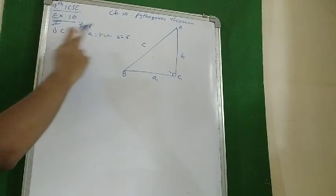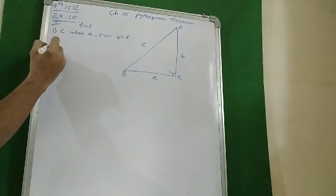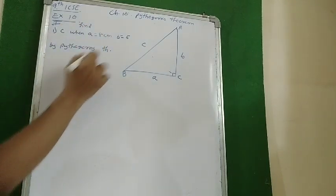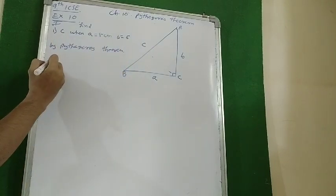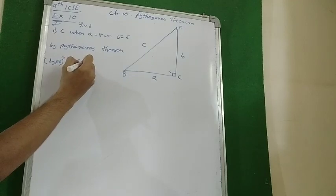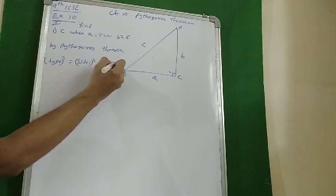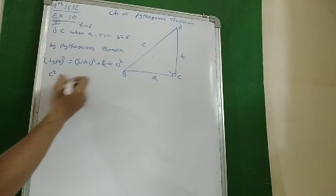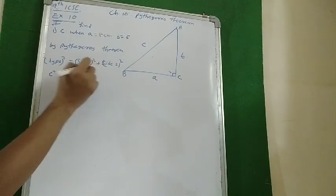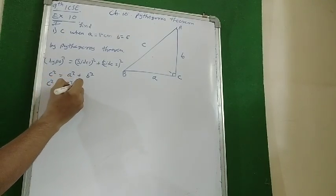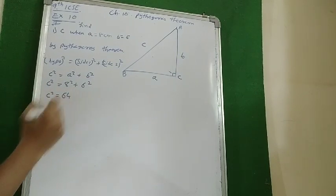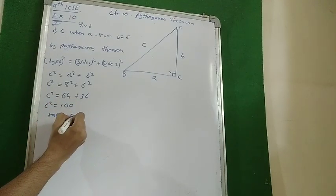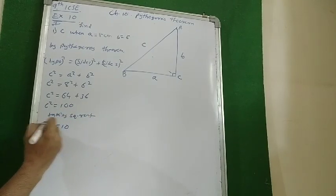In this part we will find C, and we are given B and A. By Pythagoras theorem, hypotenuse square is equal to side 1 square plus side 2 square. So C square equals A square plus B square. C square equals 8 square plus 6 square, that is 64 plus 36. C square is 100. Taking square root, C is equal to 10.